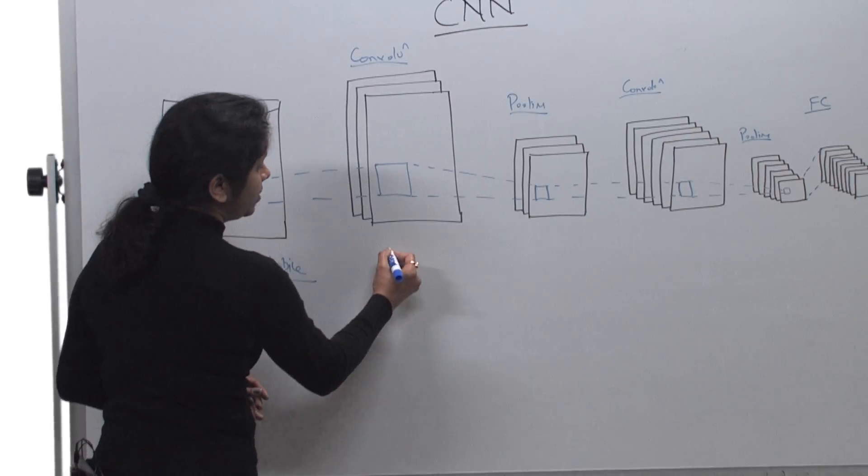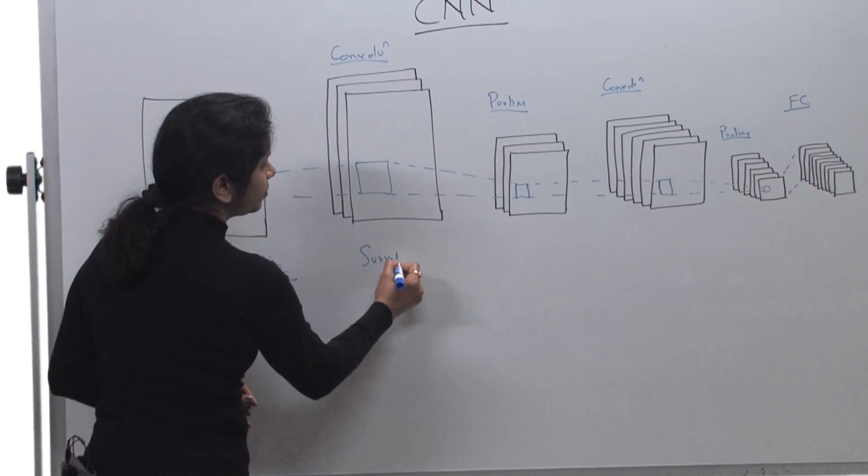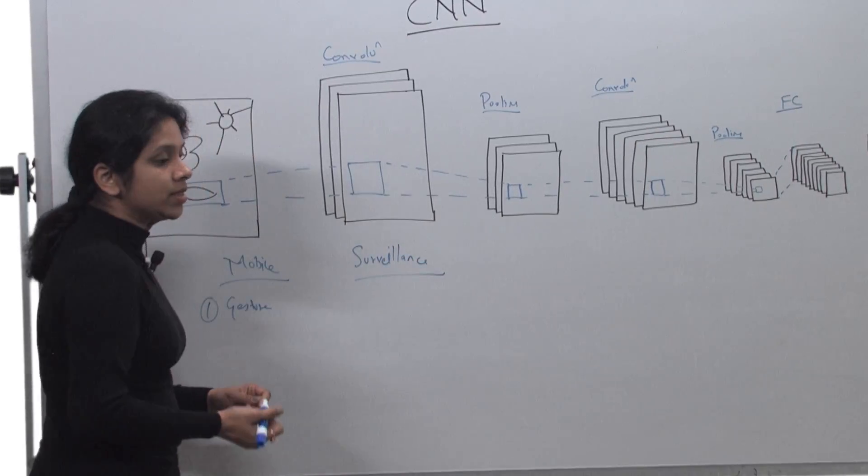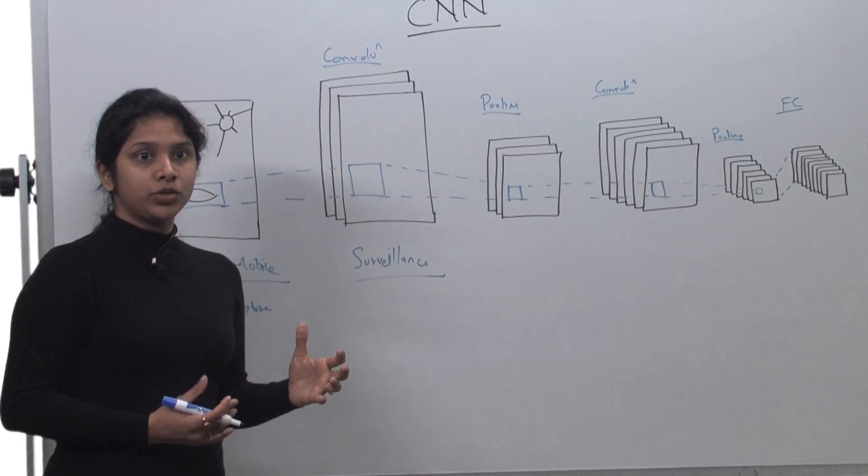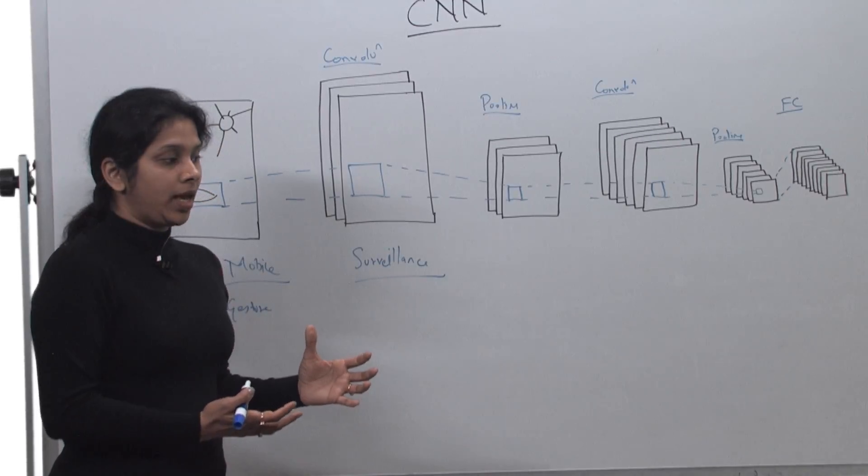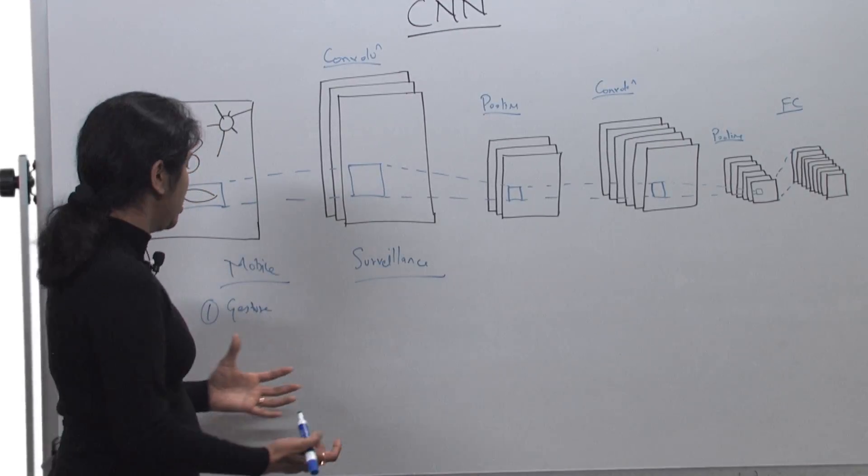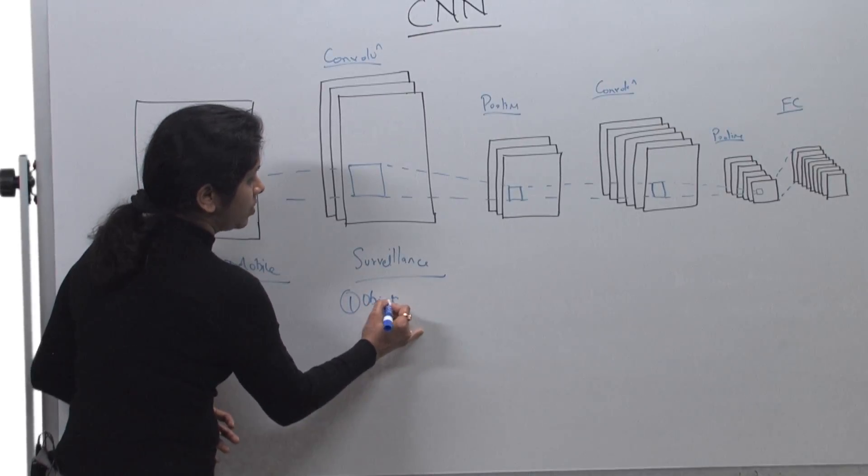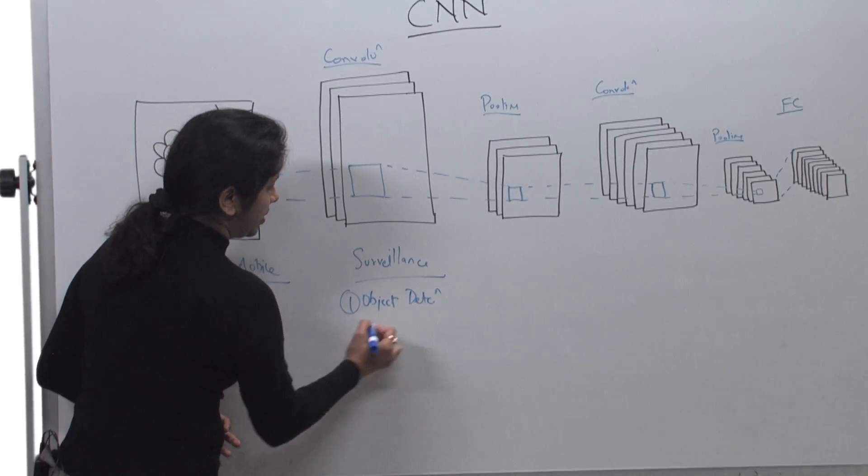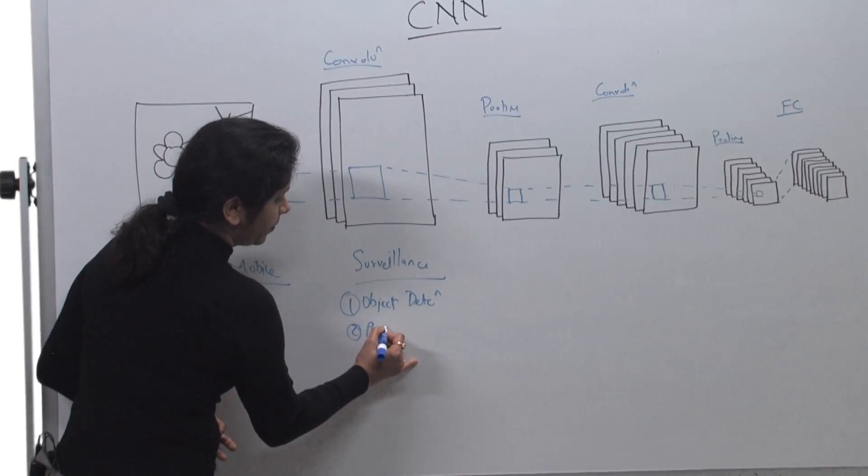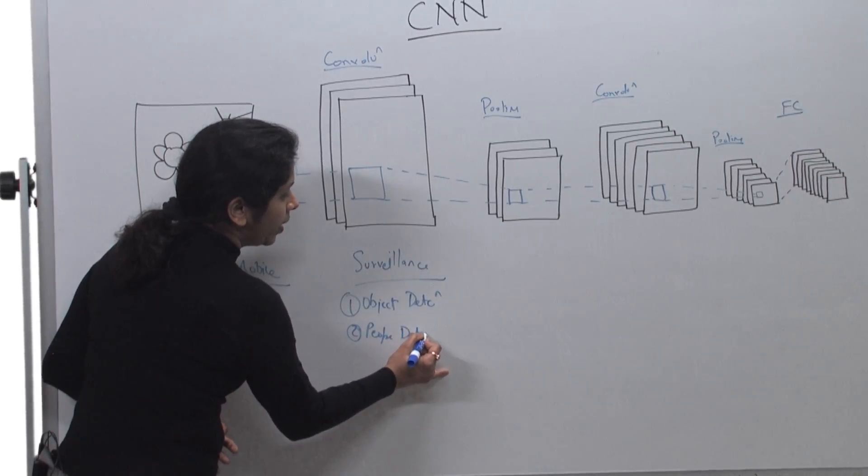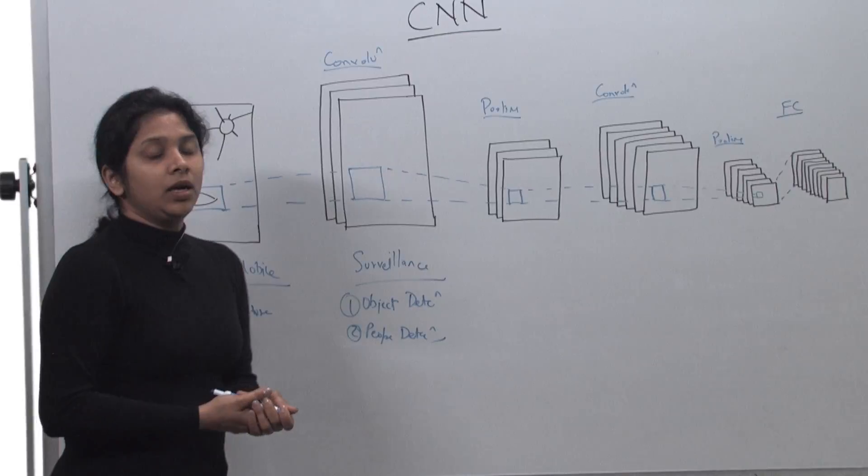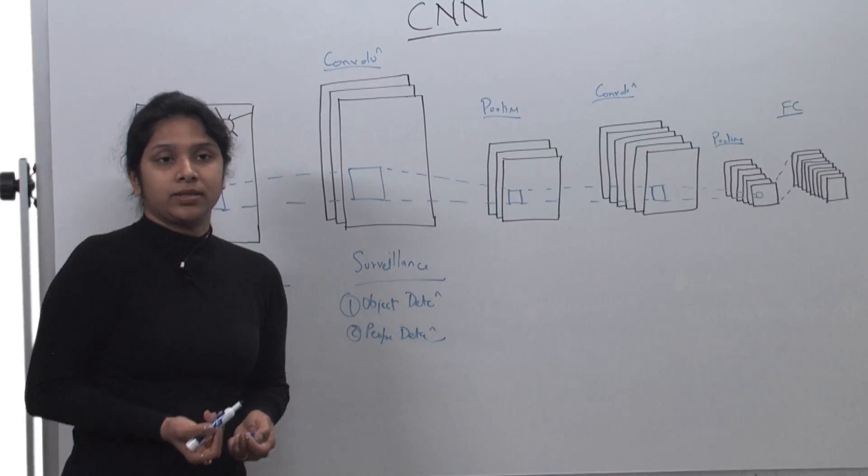Next could be something like surveillance. Surveillance is another place where we want to do object recognition and classification of that object. So it can be anything from object detection to people detection.